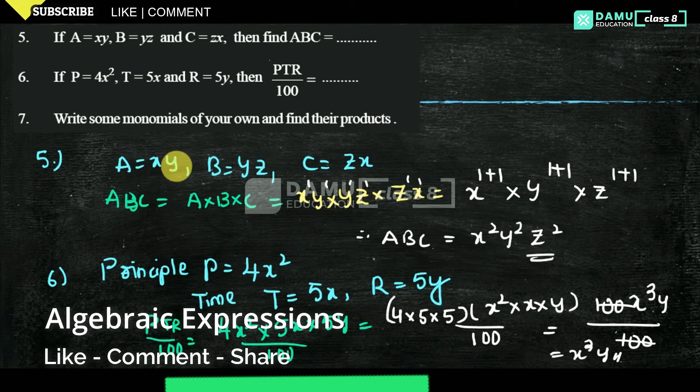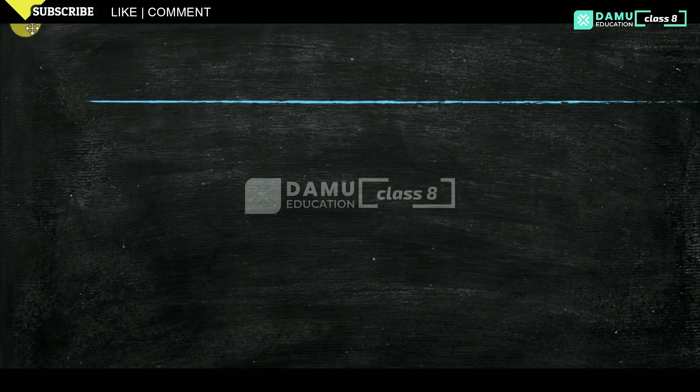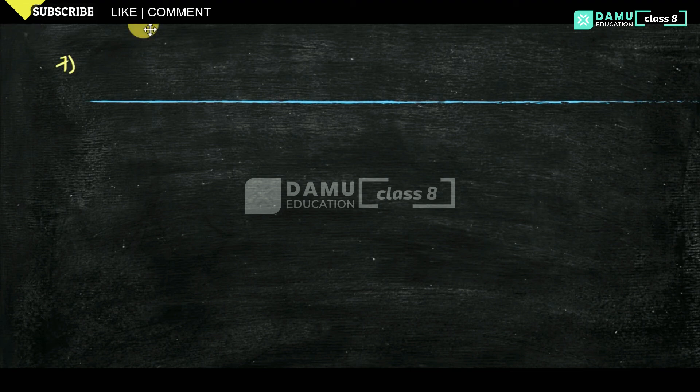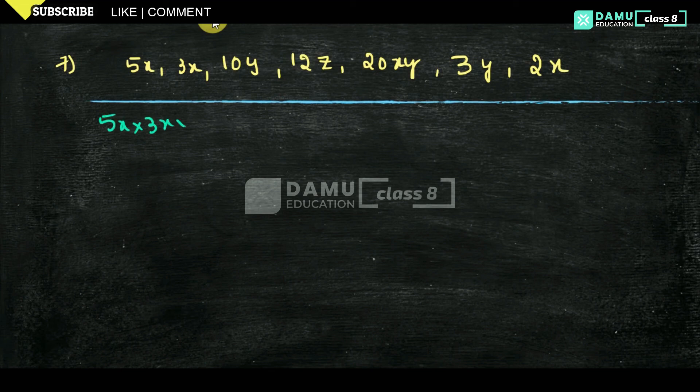Our next one is: write some monomials of your own and find their products. Question 7 is: write some monomials. They are asking us to write our own monomials. So let us take 5x, then 3x, then 10y, then 12z, then let us take 20xy, 3y, then 2x. They're asking us to find their products.